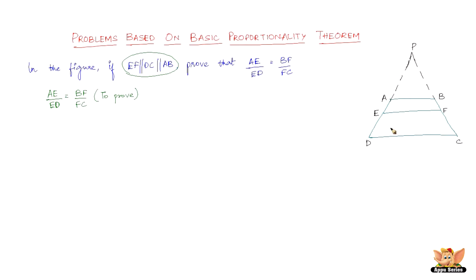What we're doing is making it a triangle. We are dealing with the basic proportionality theorem, and that involves a triangle. So we need a triangle. Now that we've done the construction and we know what we have to prove, let's go to the proof.